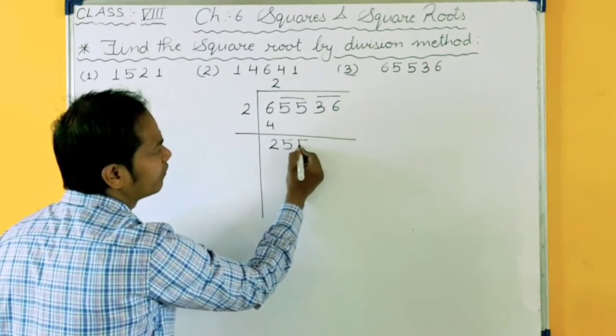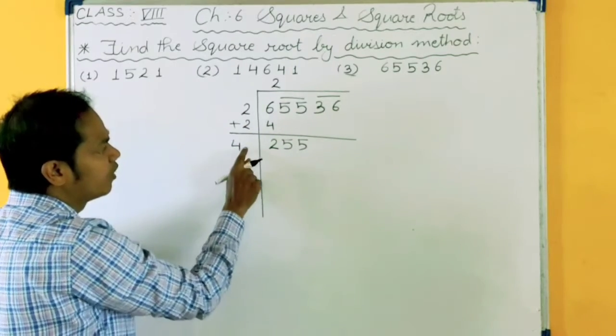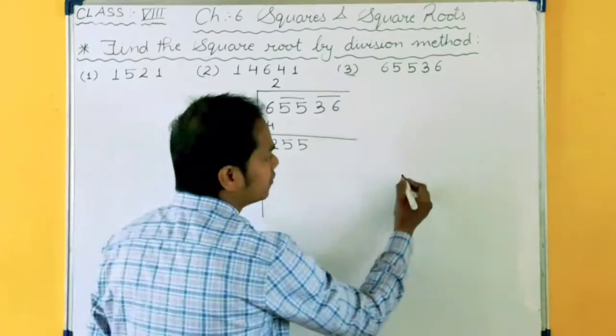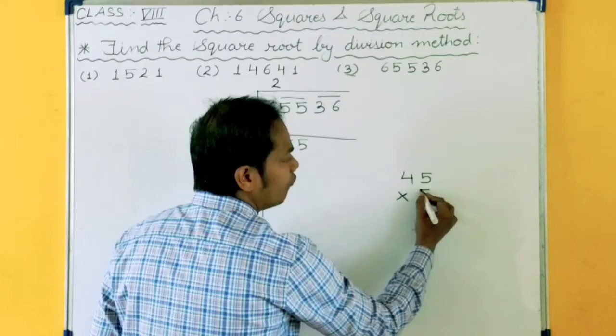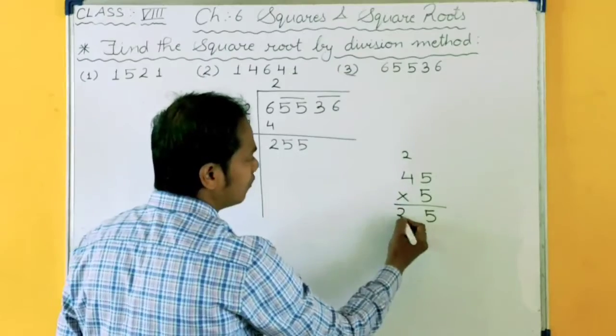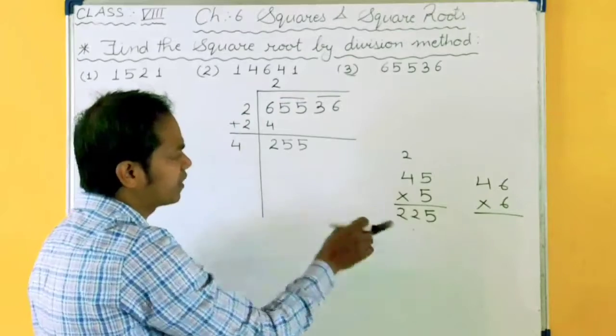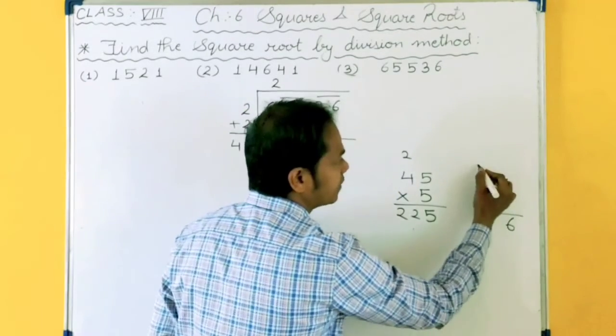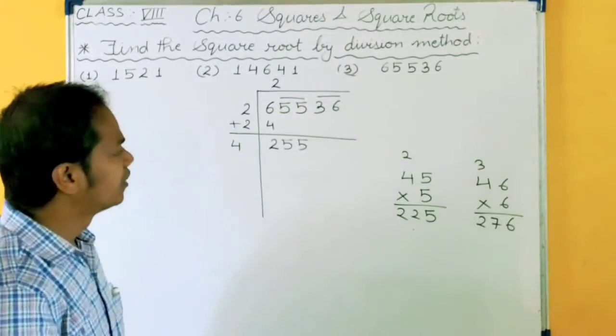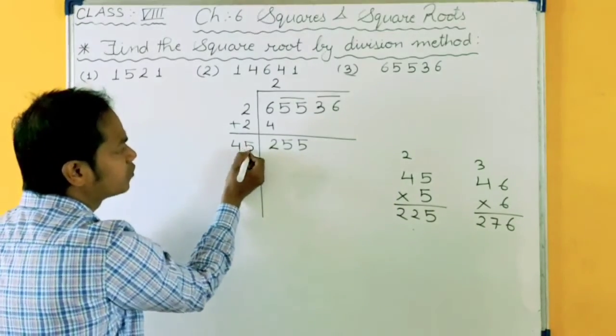Then take this pair, 255. This 2 will come in plus here. You have to plus this, 2 plus 2, 4. Now here you have to decide one number. At last 5 is there, you know that 5 times 5 is 25. So let's check it by 5. 45 multiplied by 5. 5 times 5 is 25, carry 2. 5 times 4 is 20 plus 2, 22. If I take 6, 6 times 6 is 36, carry 3. 6 times 4 is 24, 24 plus 3, 27. So 276 is greater than this. So we will take this number.